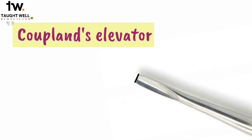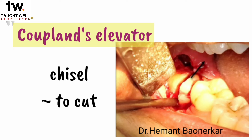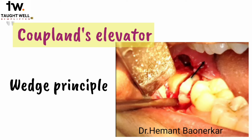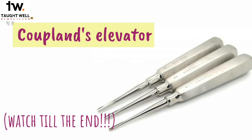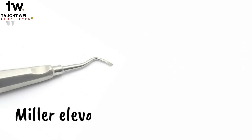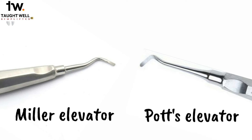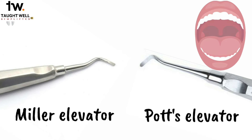This one here is Coupland's elevator. It looks just like a straight elevator, but the working end is sharp and straight cut. For this reason, it's also called Coupland's chisel because it can be used for chiseling the bone to create a purchase point. It can also be used to split a tooth. It is also available in different sizes depending on the width of the blade. Other examples of straight elevators are the Miller elevator and the Potts elevator, but the blade is at an angle from the shank, created so that we can reach more posterior areas of the oral cavity.